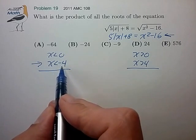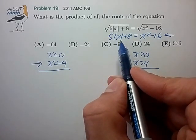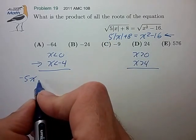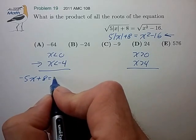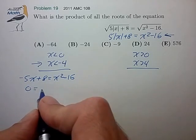So for x less than minus 4, we can reduce the absolute x to just minus x. So this equation reduces to an equivalent equation, minus 5x plus 8 is equal to x squared minus 16. Bring everything to one side.